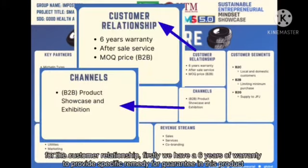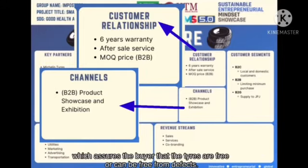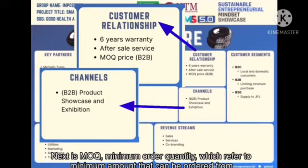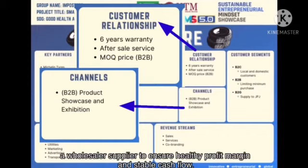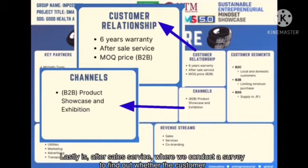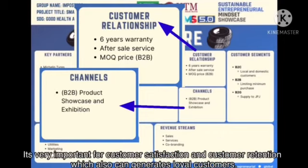Hello, I am Zulaikha. For the customer relationship, firstly, we have a 6-year warranty to provide a specific remedy and guarantee for this product, which ensures the buyer that the tyres are free from defects. Next is MOQ — minimum order quantity — which refers to the minimum amount that can be ordered from a wholesaler or supplier to ensure a healthy profit margin and stable cash flow. Lastly, after-sales service, where we conduct a survey to find out whether the customer is satisfied with the product, which is very important for customer satisfaction, retention, and generating loyal customers.